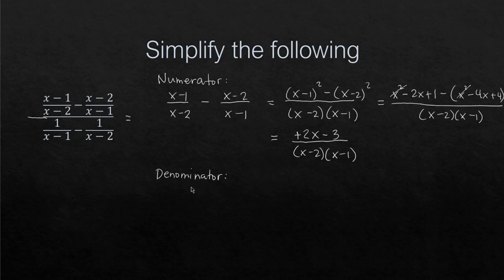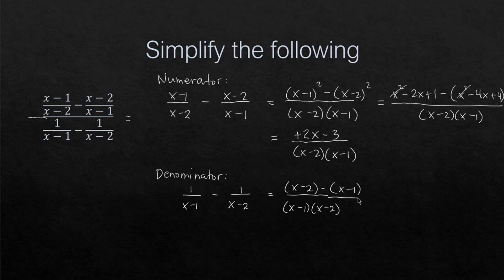For the denominator, we have 1/(x-1) minus 1/(x-2). The LCD is (x-1)(x-2). Distributing and simplifying: (x-2) minus (x-1) gives us x - x = 0, and -2 minus -1 = -1. So the denominator simplifies to -1 over (x-1)(x-2).